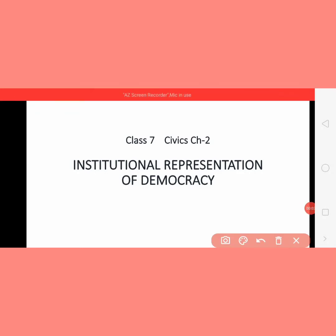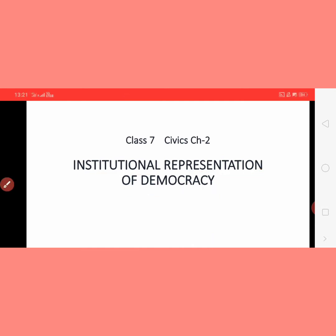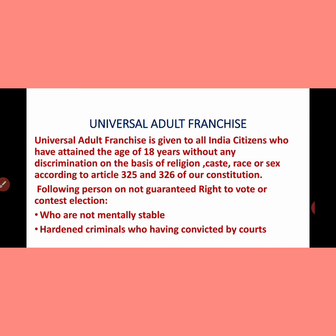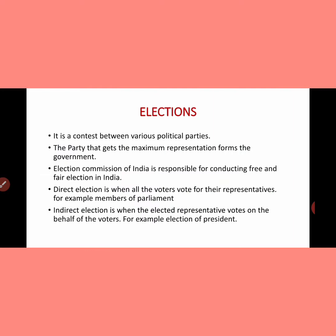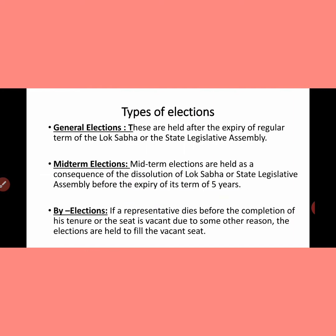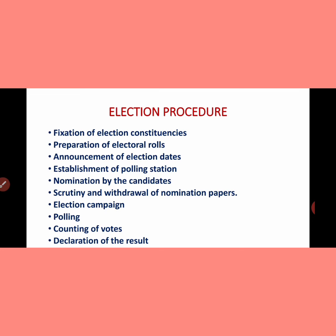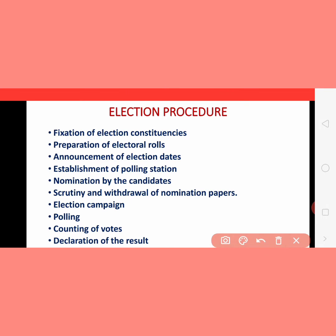Welcome, my dear students of class 7. We are doing the second chapter of civics — institutional representation of democracy. In the last video we studied about universal adult franchise, its significance, and what is an election and the types of elections. Today we will study about the election procedure — how elections are conducted. The election procedure is checked and controlled by the Election Commission of India.